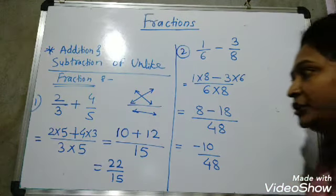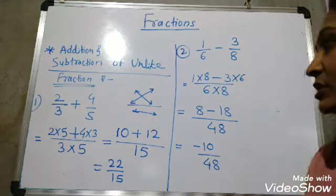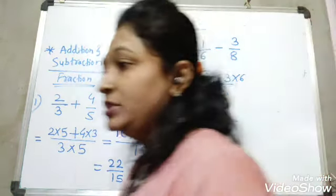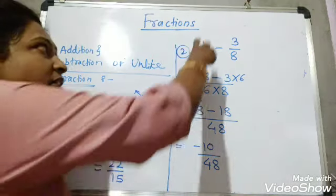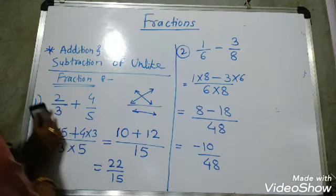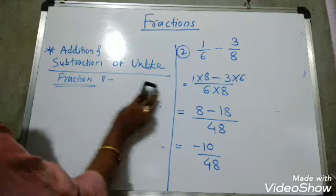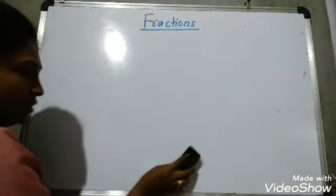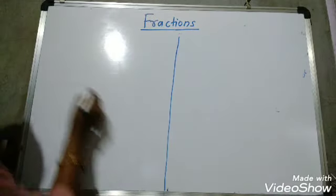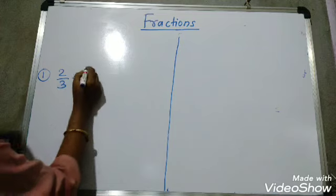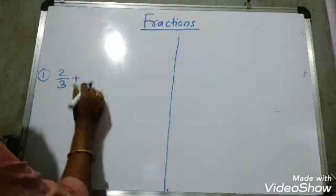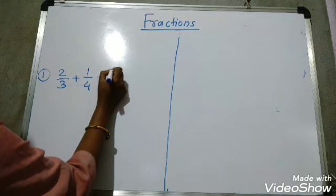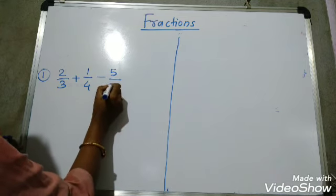Cross multiplication is easy for two fractions, but if there are more than two fractions, it becomes lengthy. So you should use the LCM method. Let's take an example with three fractions: 2 upon 3, plus 1 upon 4, minus 5 upon 6. All three have different denominators, so we need to find their LCM.